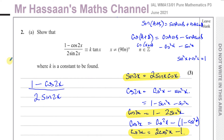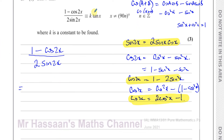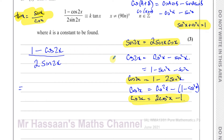I also know that tan x = sine x divided by cosine x — a very important identity from P2. To get tan x in the result I want a sine x on top and cosine x on the bottom. So I'll change cosine 2x into 1 − 2 sine squared x, because that will give me a sine in the numerator. The denominator 2 sine 2x will become 2 times 2 sine x cosine x — be careful, there's a factor of 2 in front.